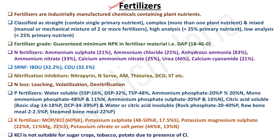When soil fertility is lower — meaning the soil has less potential to supply nutrients in suitable proportion and required quantity — that capacity depletes through erosion, plant uptake, weed uptake, leaching, and other losses.